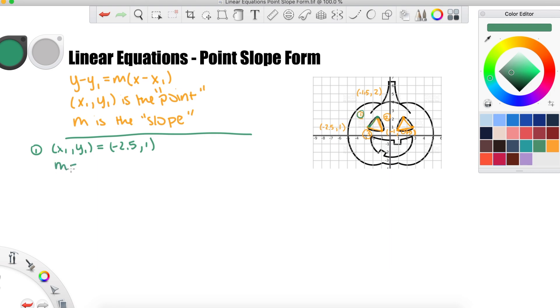Then from the graph, we can figure out the slope, which is rise over run. Starting at our original point, in order to get to our second point, negative 1.5, 2, we need to rise up by 1 and run to the right by 1. So our slope is actually just 1. We can plug these numbers into the formula above and get our equation.